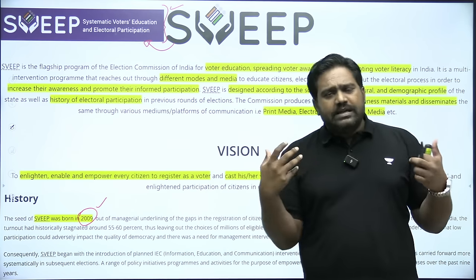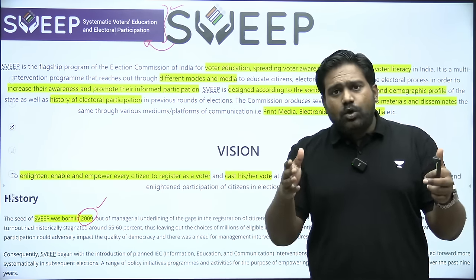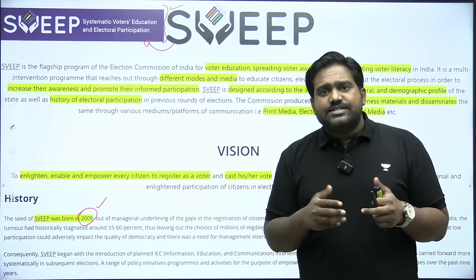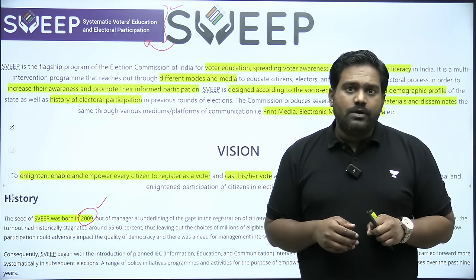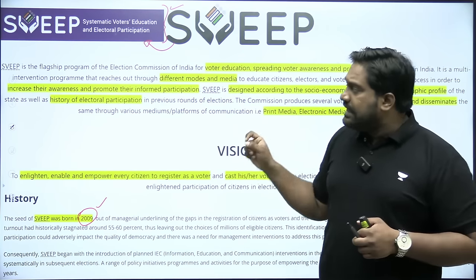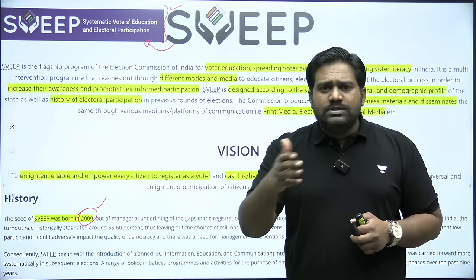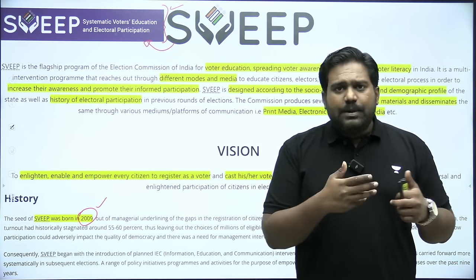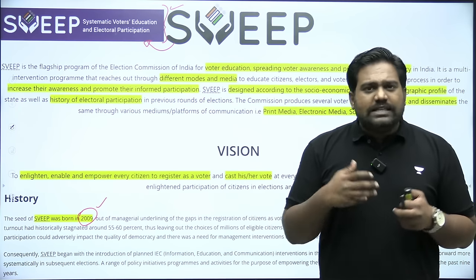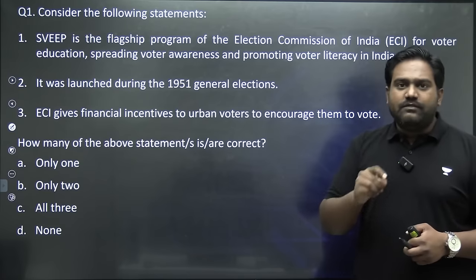The Election Commission uses various methods under SWEEP. It studies electoral data, looks at voter participation in every constituency in past elections, and shortlists constituencies where voting percentage has been historically low — especially urban constituencies. It works with all stakeholders to promote awareness, including schools, colleges, and private companies, to spread the message and encourage voters to come out and vote.